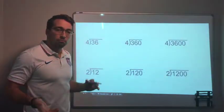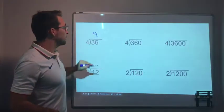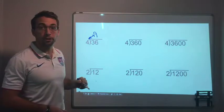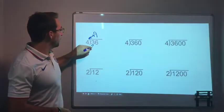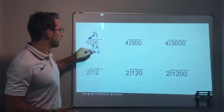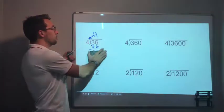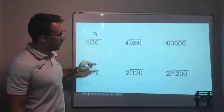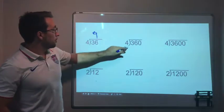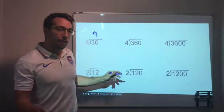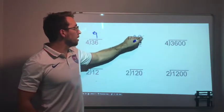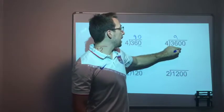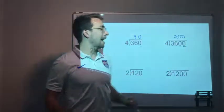Let's look at these examples. 36 divided by 4 is 9. We can check: 9 times 4 is 36. Great. Now 360 divided by 4: that's 9, with one zero, so 90. And 3600 divided by 4: that's 9 with two zeros, so 900. And we can verify: 900 times 4 is 3600.